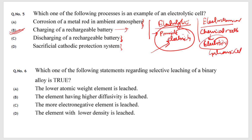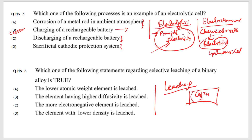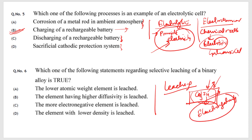Next question: which statement regarding selective leaching of a binary alloy is true? Options are: lower atomic weight element is leached, element with high diffusivity is leached, more electronegative element is leached, or element with lower density is leached. In selective leaching — for example in a copper-zinc alloy — the element with higher electronegativity has more affinity and instability, so it tries to combine with the surrounding environment or liquid. Therefore, the answer is C: the more electronegative element is leached.